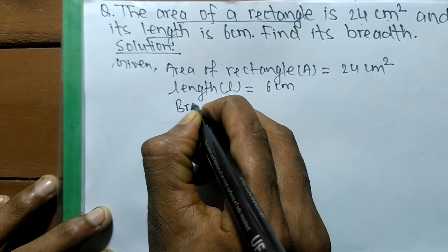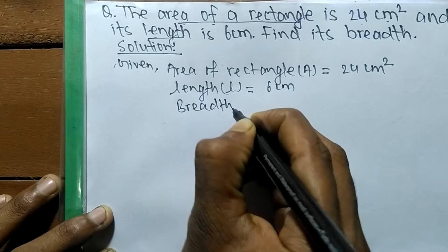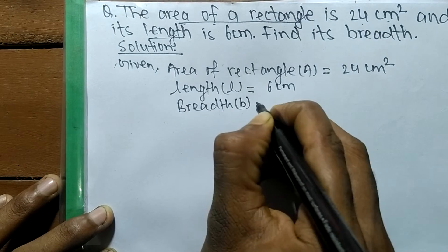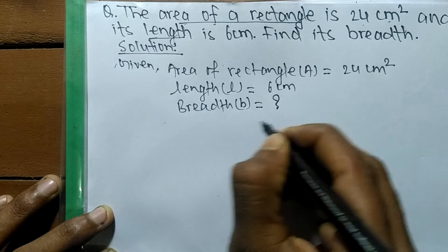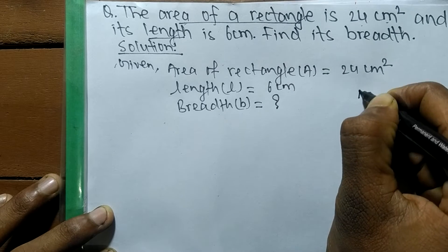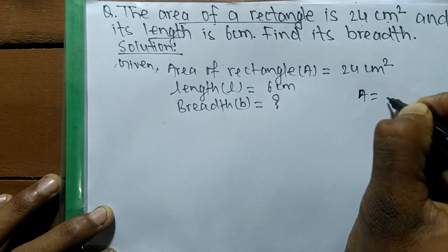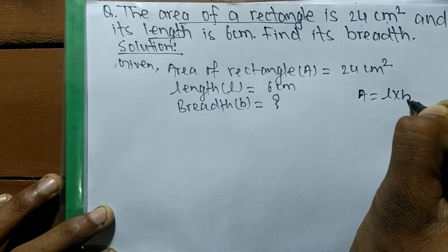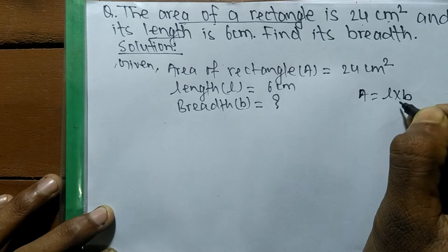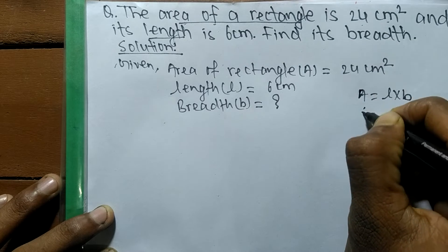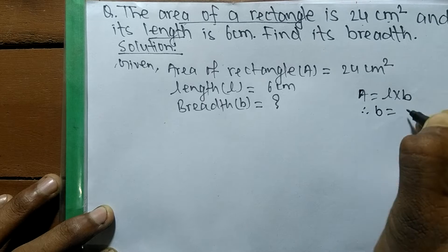And we have to find its breadth, so breadth suppose we let it B is equal to what we have to find out. As you know, area of a rectangle is equal to length into breadth. And here we have to find out breadth, so from here we can write B is equal to A by L.